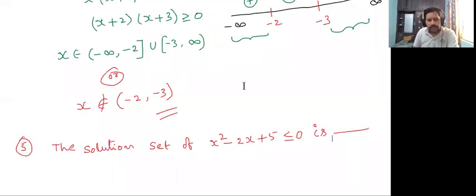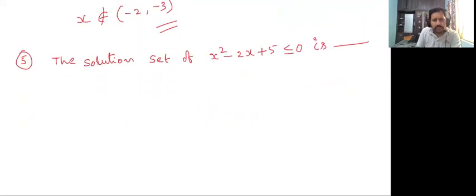See the fifth question how to do that. This is a quadratic equation but there are no factors. Then how to do that?